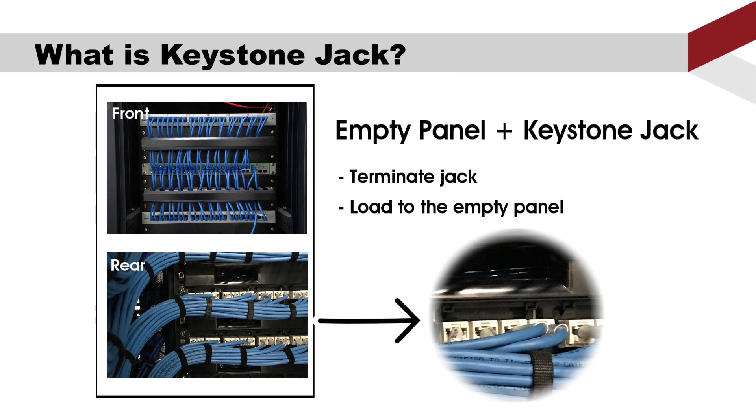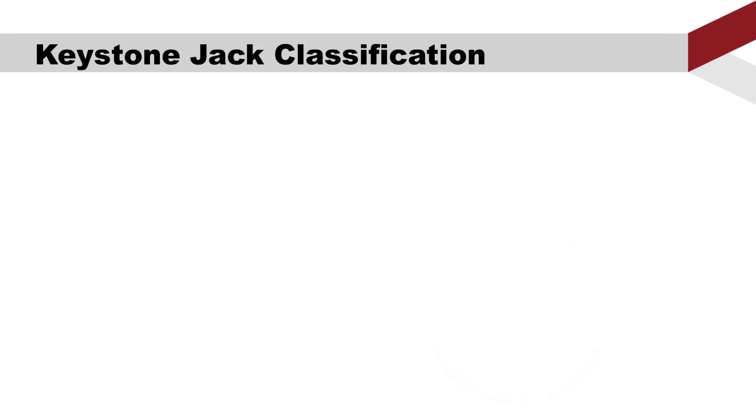You just need to terminate the Ethernet cable first, fix them on the IDC module jack, and load it to the empty panel. The Keystone Jacks are classified by various standards.